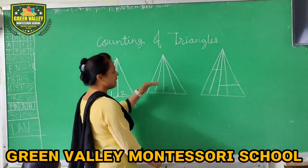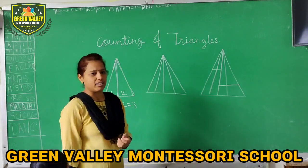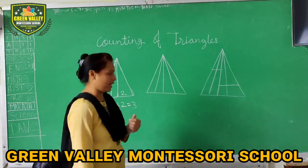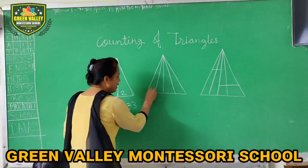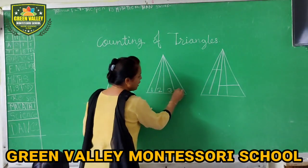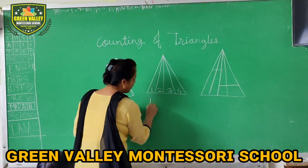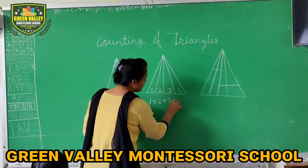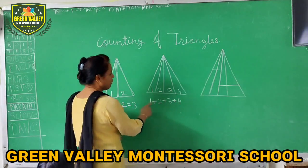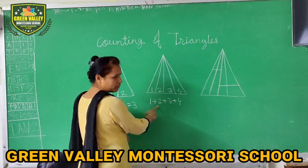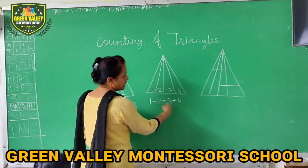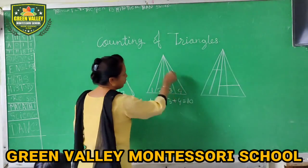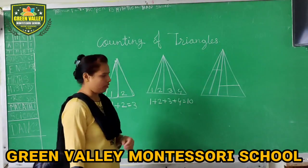So, this figure has a total of 3 triangles. Now, next figure. This figure is the same. So, we have to see: 1, 2, 3, 4. And we have to add this: 1 plus 2 plus 3 plus 4. 1 plus 2 is 3, 3 plus 3 is 6, 6 plus 4 is 10. So, this figure has a total of 10 triangles.